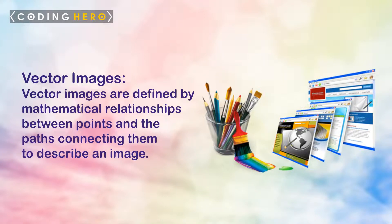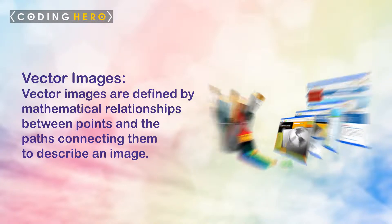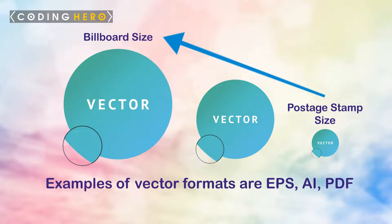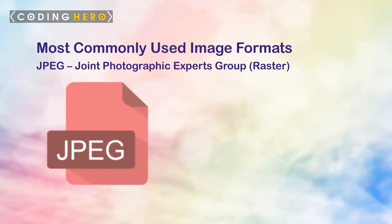Vector images are defined by mathematical relationships between points and the paths connecting them to describe an image. Vector images are digital images whose representation is compact and are scalable and resolution independent. The real beauty of vectors lies in their ability to be sized as small as a postage stamp or large enough to fit a billboard. Examples of vector formats are EPS, AI, and PDF.